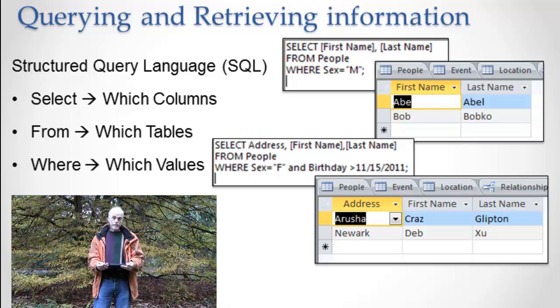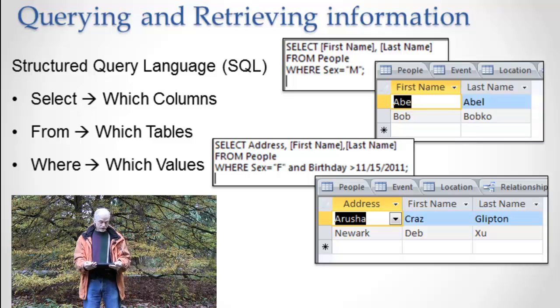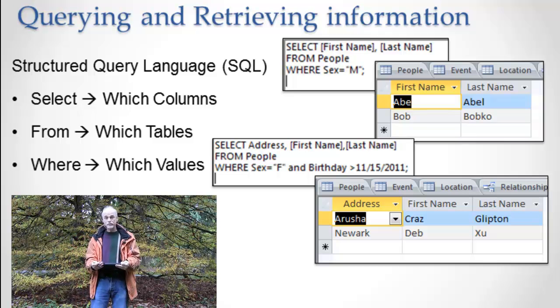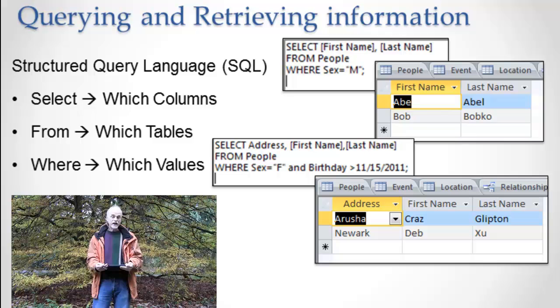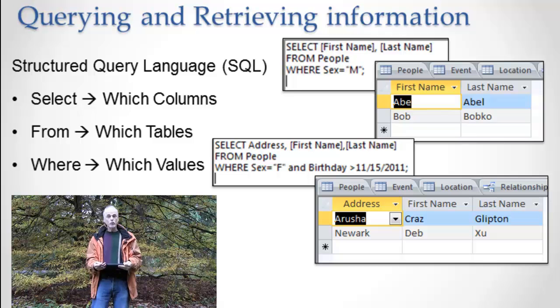So first thing is, I want a certain number of columns. I want to see a certain number of columns. I use the word select for that. Second thing is, I want to use a certain number of tables. I want to see information from a certain number of tables. I use the word from for that. And I want to know, I want to see them based on which values. I want to select columns from a table based on values. And I use the word where for that.